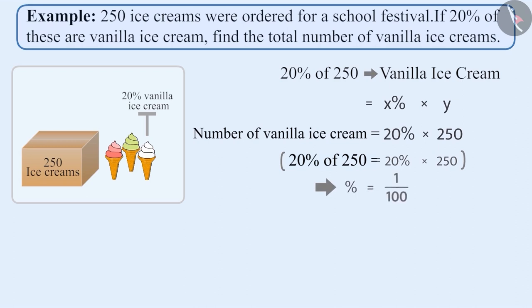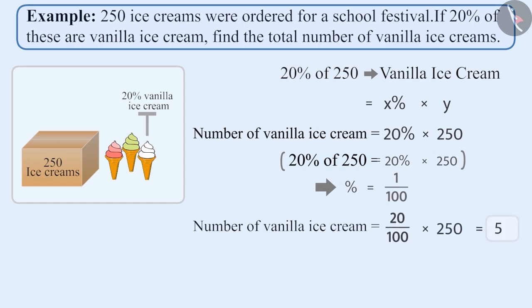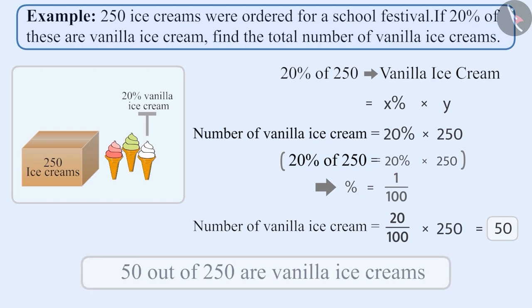Since percentage means 1 by 100, the number of vanilla ice creams equals 20 by 100 into 250, which equals 50. That is, 50 out of the 250 are vanilla ice creams.